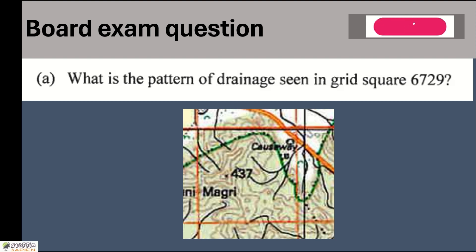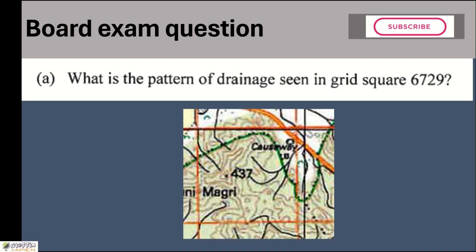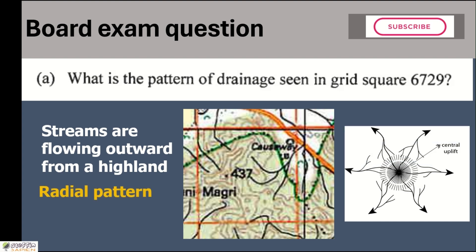From the top of the hill, rivers are originating and moving in all different directions. When you observe these dry streams, they are moving to northwest, northeast, southeast, southwest and in all different directions. We can see streams moving outward in different directions from a highland. So the drainage pattern here is radial.